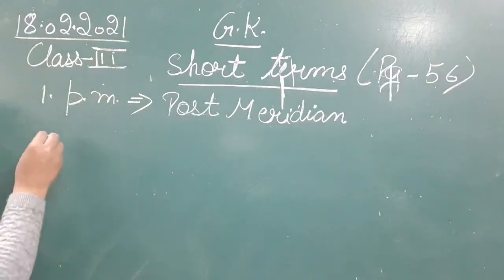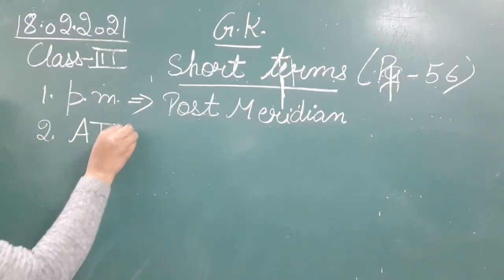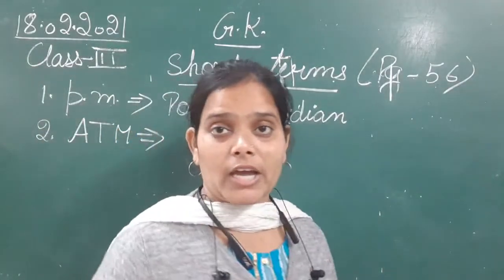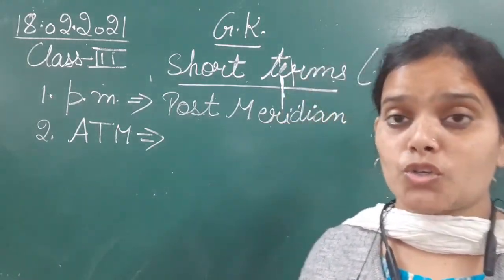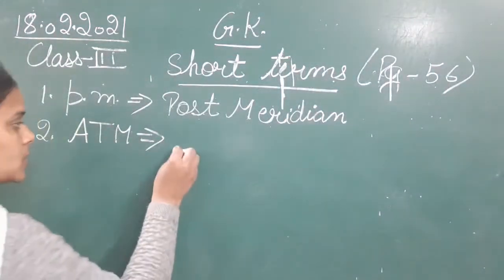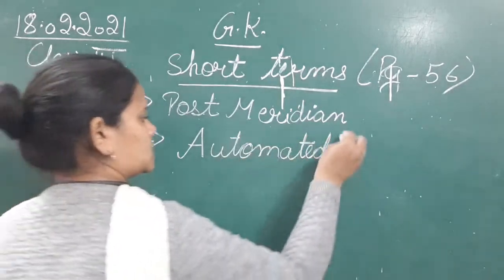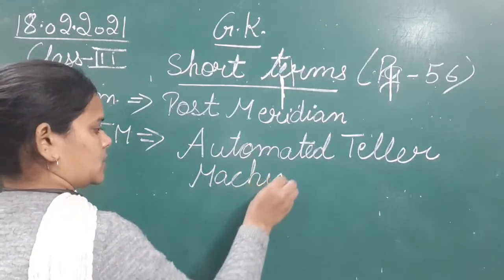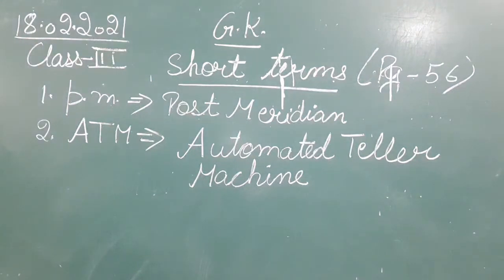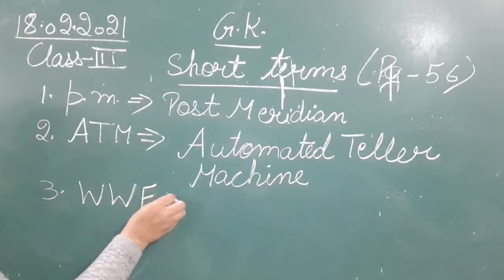Moving next to the second one. The second short term is ATM — the machine we use for withdrawing cash directly from our account. The full form of ATM is 'Automated Teller Machine'.